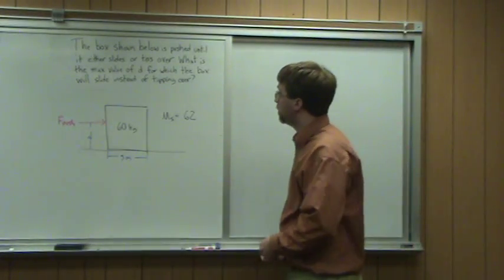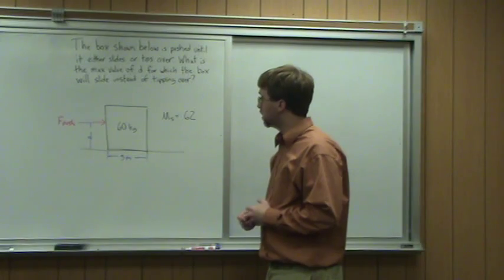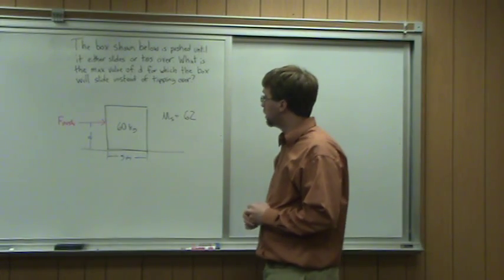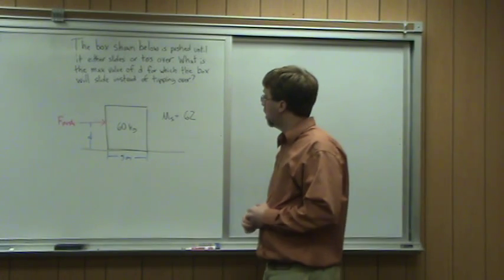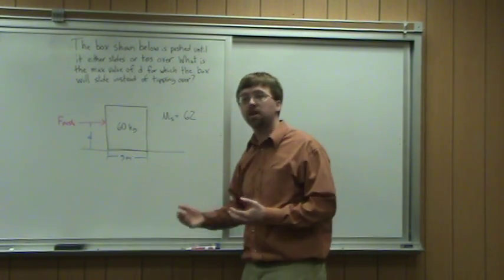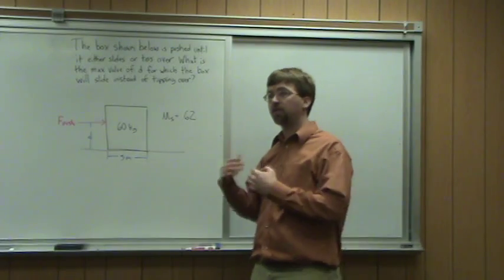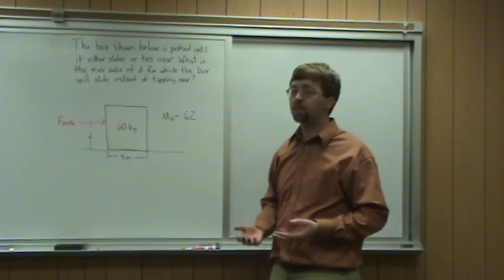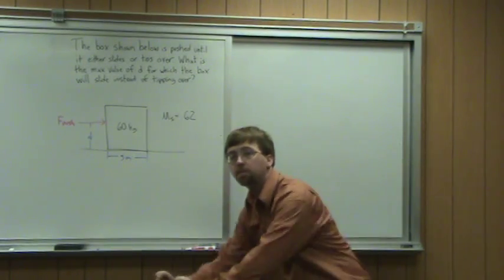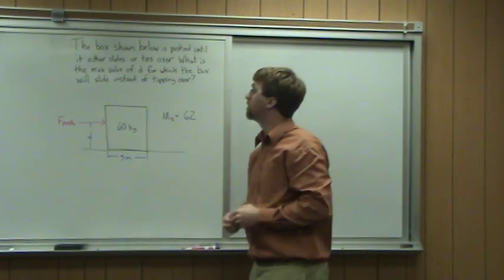Hello. For this problem, we've got a 60 kilogram box sitting on a surface. The coefficient of friction between the surface and the box is 0.62. We're going to push on this box until it either starts to slide or starts to tip over. The thing we can adjust is the distance. I can push on the bottom of the box or way up on the top of the box.